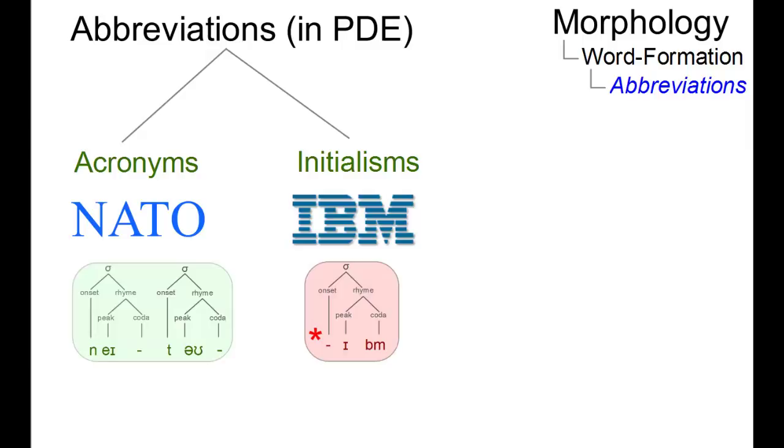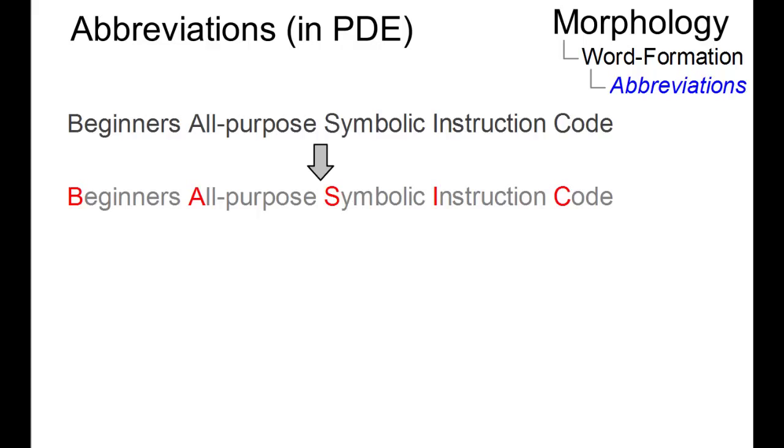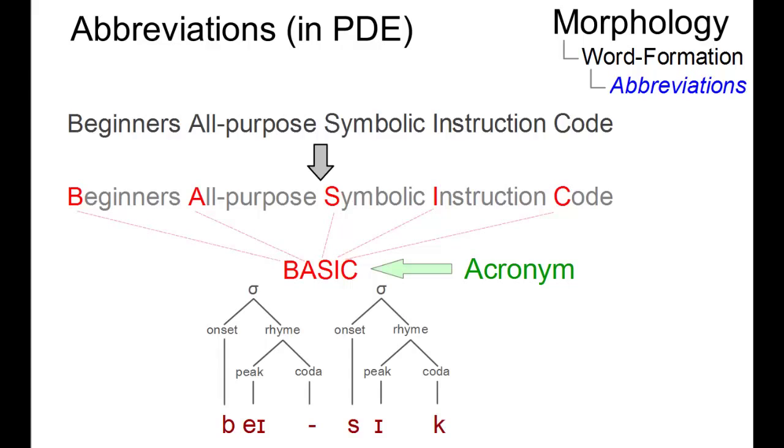A popular method of forming words in present-day English involves using the initial letters of an expression to form abbreviations. For example, if the initial letters of an expression can be combined to form a pronounceable word with well-formed syllables, the result is referred to as an acronym.